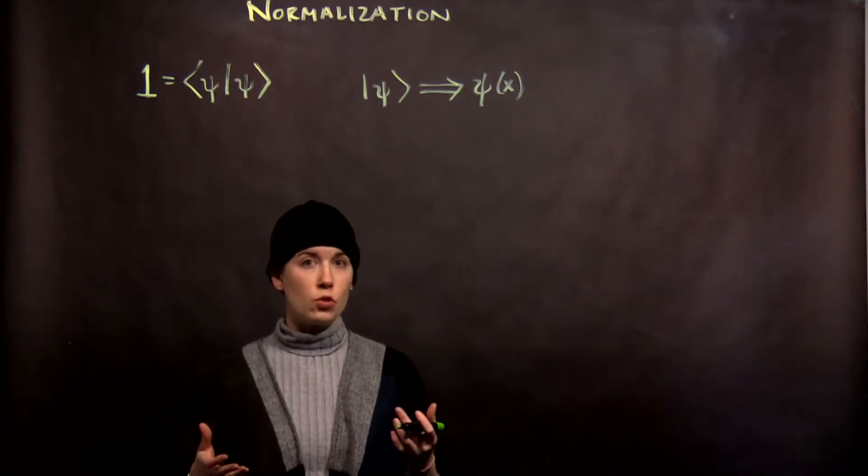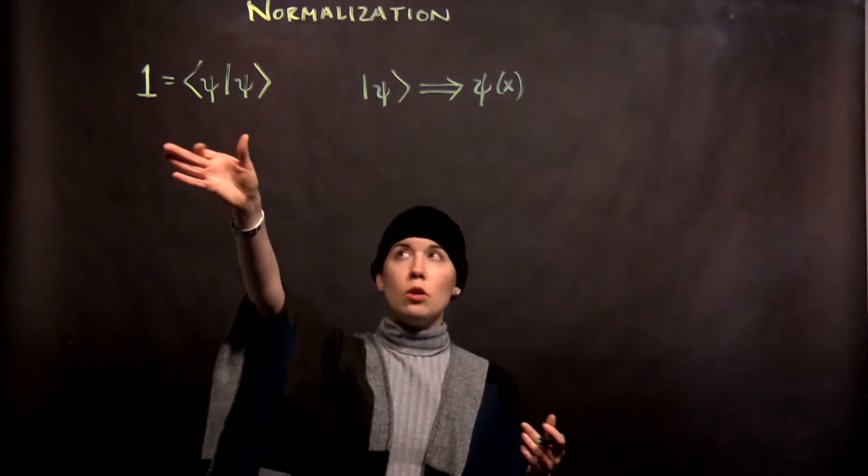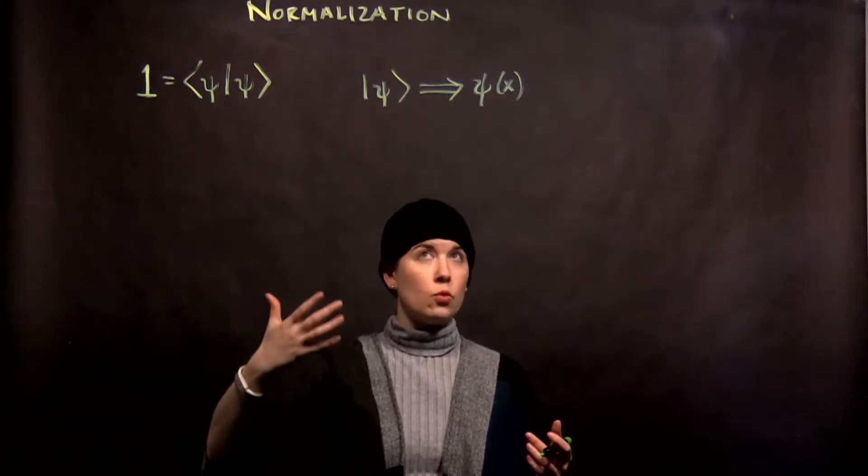Now that our state is a function of position, we need to think about normalization a little bit differently. So before, we had that this inner product would equal 1, and that would mean that our state is normalized.